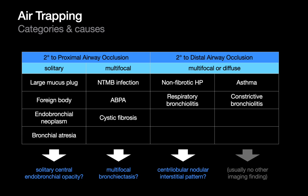Sometimes air trapping is due to more distal airway occlusion rather than proximal. Examples are disorders like non-fibrotic HP and respiratory bronchiolitis, where you'll see multifocal or diffuse air trapping in the setting of a centrilobular interstitial pattern. Asthma and constrictive bronchiolitis are two other causes of air trapping due to distal airway occlusion, occurring in multifocal or diffuse distribution, but often with no other associated imaging findings — so the only finding may be the air trapping itself.